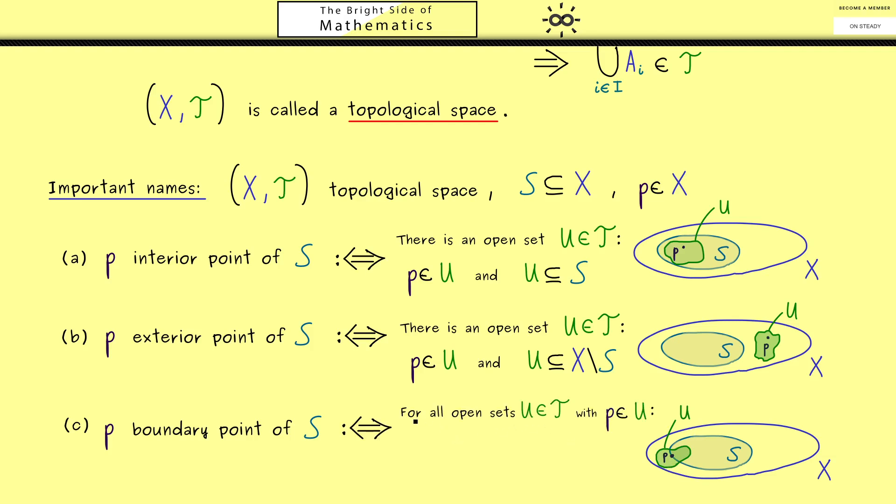Hence, we can write: for all open sets U with the property that p is an element of U, we have U intersected with S is non-empty and U intersected with X without S is also non-empty. Then such a point p with this property we call a boundary point of S.